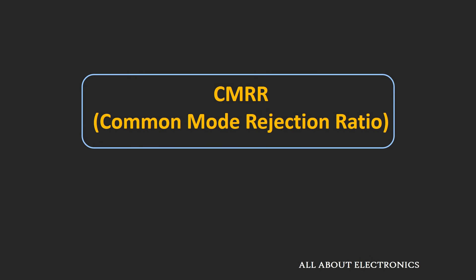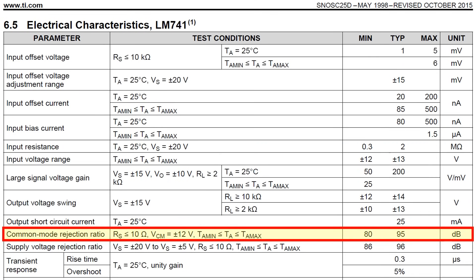Hey friends, welcome to the YouTube channel All About Electronics. In this video we will understand what is common mode rejection ratio in op-amp. If you see the datasheet of any op-amp, you will find that out of the many parameters, one parameter which is defined for the op-amp is common mode rejection ratio. Let us understand what we mean by this common mode rejection ratio and what is the importance of this parameter in op-amp.